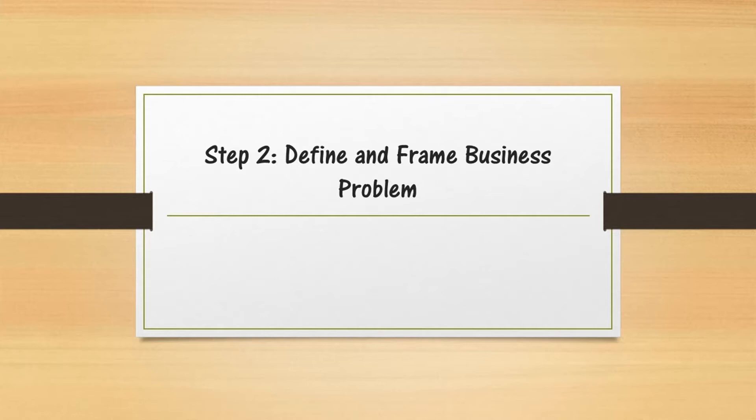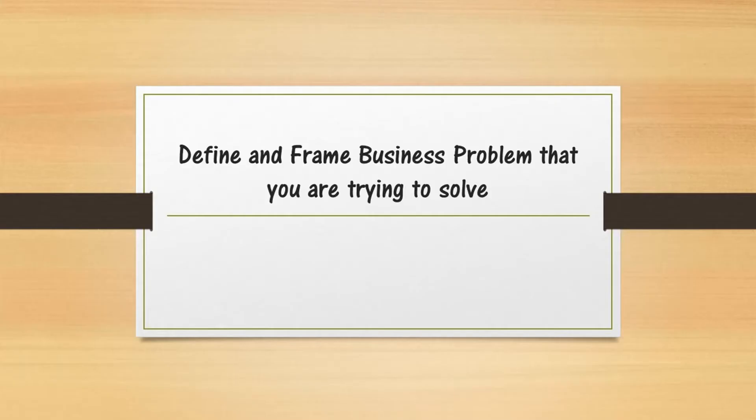The next step, once you understand the business process, is to define and frame the business problem. During this phase you talk to key stakeholders — from business, operations, and your credit analyst team — to understand exactly what is wrong with the current decisioning process. What the business is noticing is that some customers who were recently underwritten have since become charged-off accounts or have been running late on their payments. Charged-off accounts are accounts where customers have missed payments for some time.